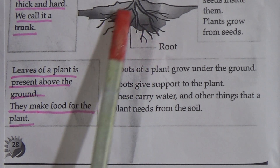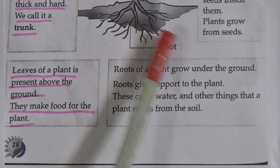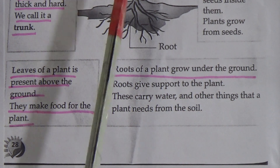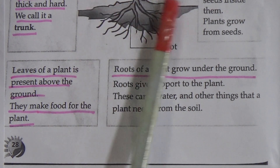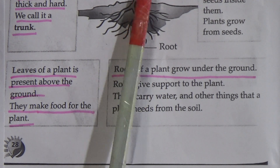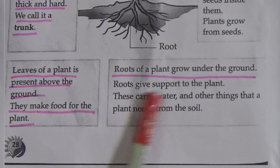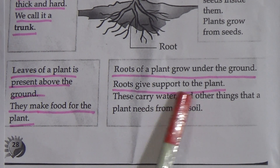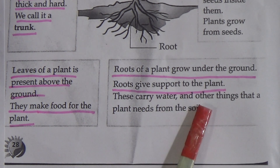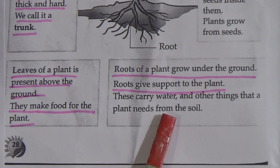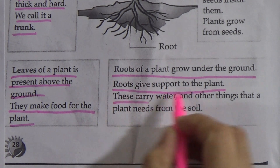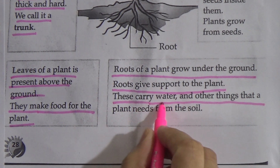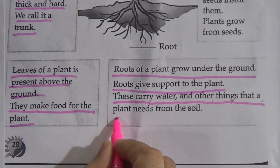Now we will discuss the function of root. Roots of a plant grow under the ground. Roots give support to the plant. They also carry water and other things that a plant needs from the soil. So the function of root is: it gives support to the plant and carries water and other things from the soil.